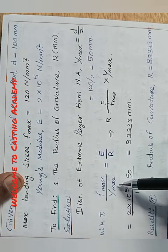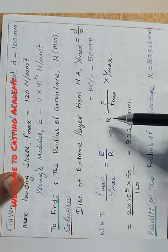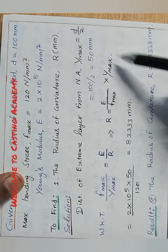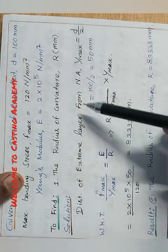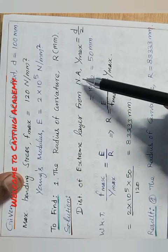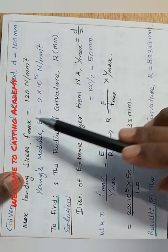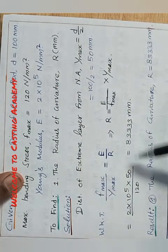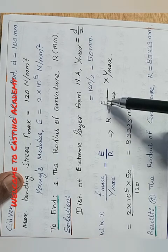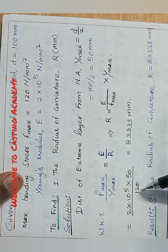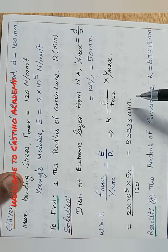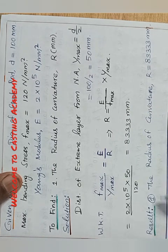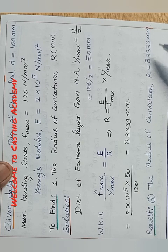Using the bending relation Fmax/Ymax = E/R, we solve for R. The unknown parameter is Ymax: distance of the extreme layer from the neutral axis, Ymax = D/2 = 100/2 = 50 mm. Substituting: R = E × Ymax / Fmax = (2 × 10⁵ × 50) / 120, giving R = 8333 mm. The radius of curvature R equals 8333 mm.